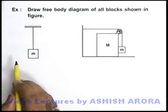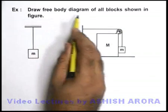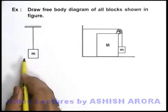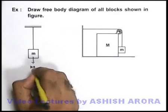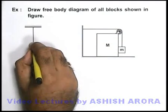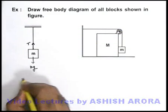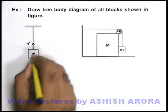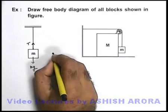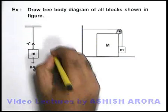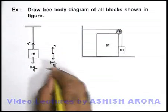To understand tension in a string better, we take up an example. It says: draw the free body diagram of all blocks shown in the figure. In this situation, if we talk about this block, it will experience its weight mg in the downward direction. And due to the weight, the tension force will act away from the point of contact or the tied end — it will act in the upward direction. If we draw its free body diagram, we consider this mass as a point mass: in the downward direction it experiences mg, and in the upward direction it experiences the tension. So this is the free body diagram of this block.